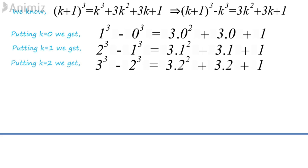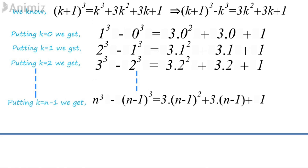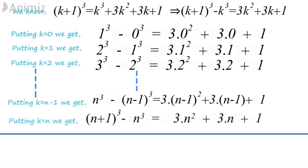Now we are going to add all this. Continuing in this way, I will write the last terms: for K equals to N minus 1, we get N cube minus N minus 1 cube equals to 3 into N minus 1 whole square plus 3 times N minus 1 plus 1. And for K equals to N, we get N plus 1 cube minus N cube equals to 3N square plus 3N plus 1.